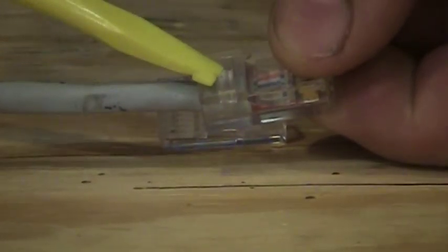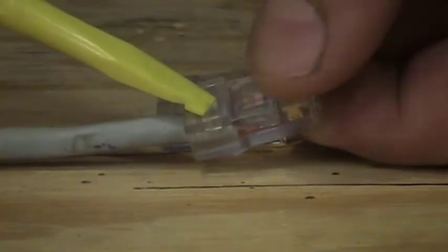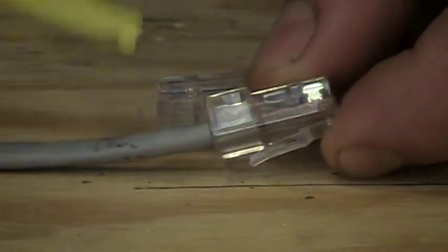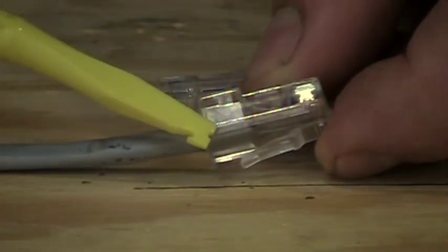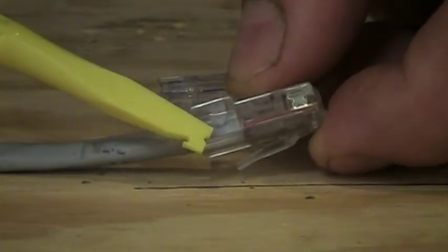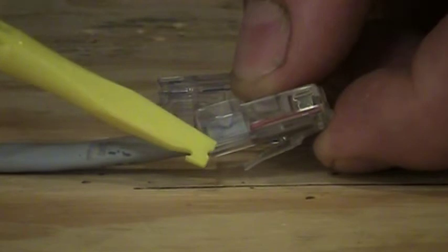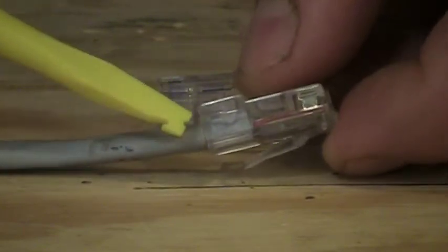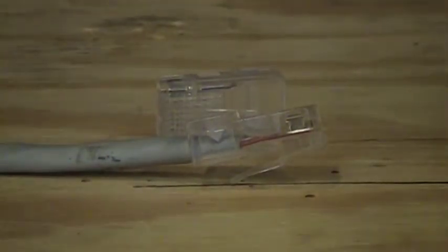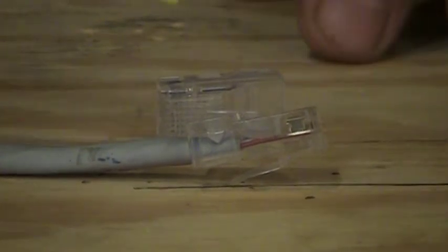On top of that is a plastic piece that as the tool crimps the plug down, is going to drive that plastic on top of this outer jacket and provide some strain relief. So when we get done, that outer jacket is going to be underneath the plastic and all the way down. In Category cables, when we terminate, we're basically allowed to leave untwisted roughly a half inch of cable per pair.